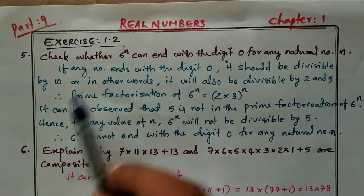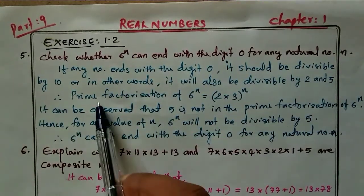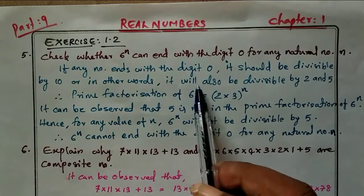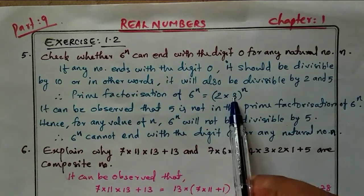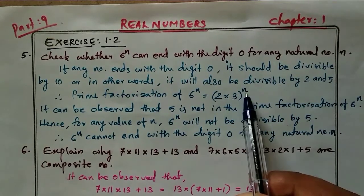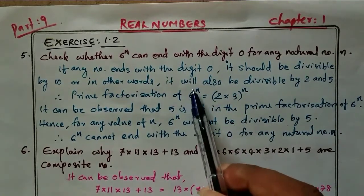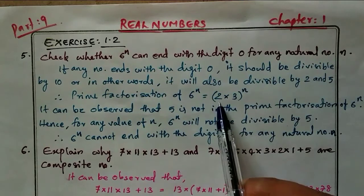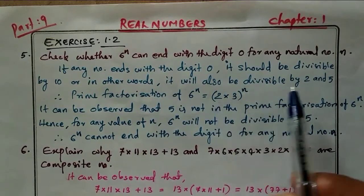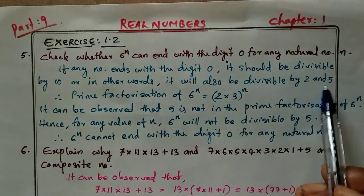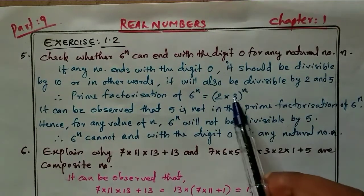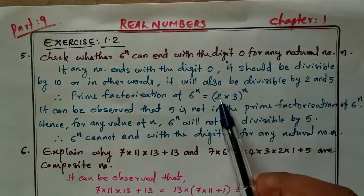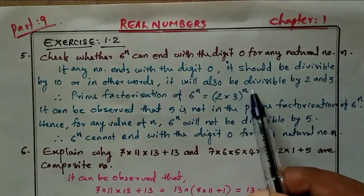In the case of 6 raised to n, the prime factorization of 6^n equals (2 × 3)^n, since 2 and 3 are the factors of 6. So we have 2 but no 5. Only 2 and 3 repeat: (2×3)^1, (2×3)^2, (2×3)^3, and so on.